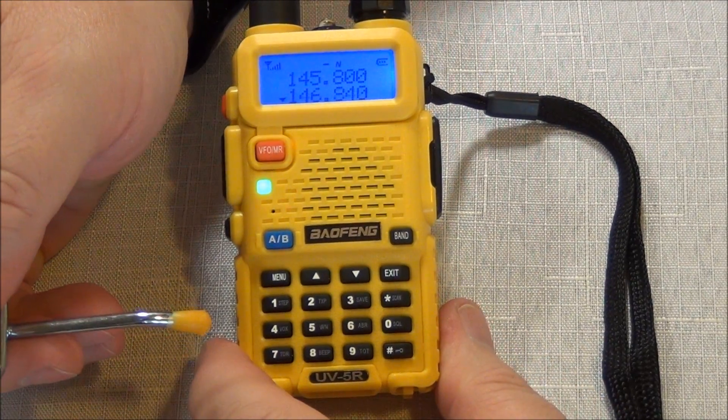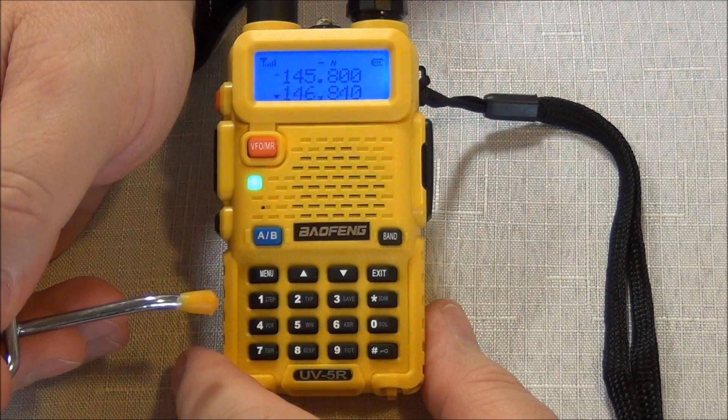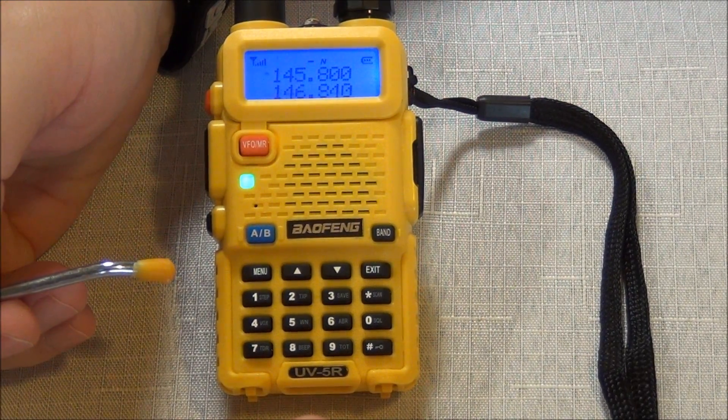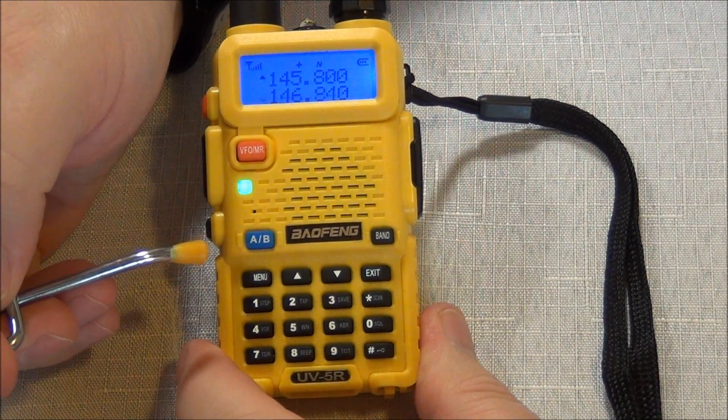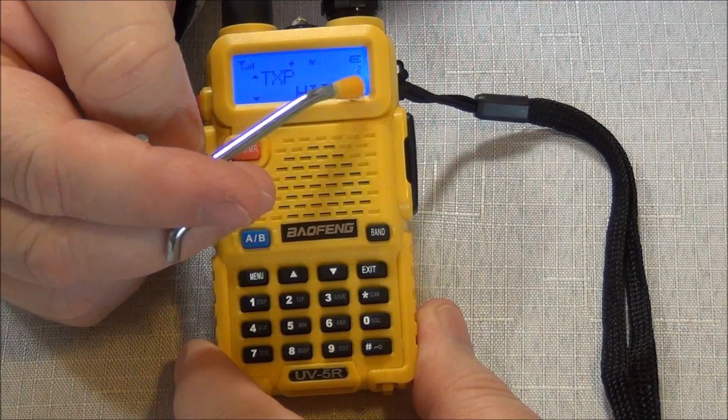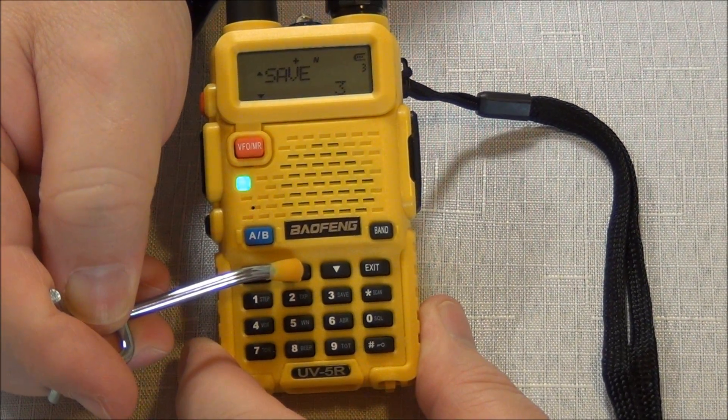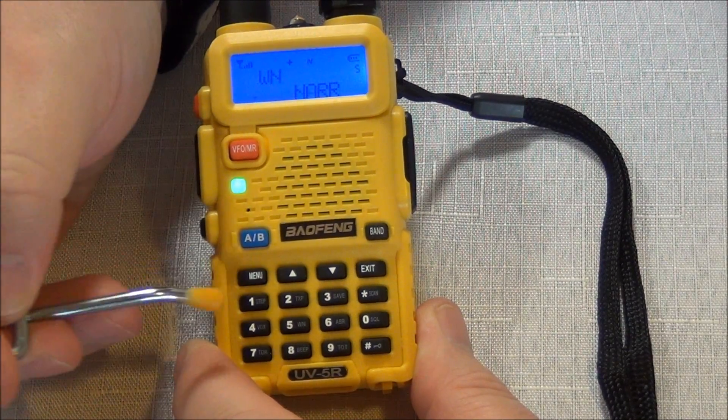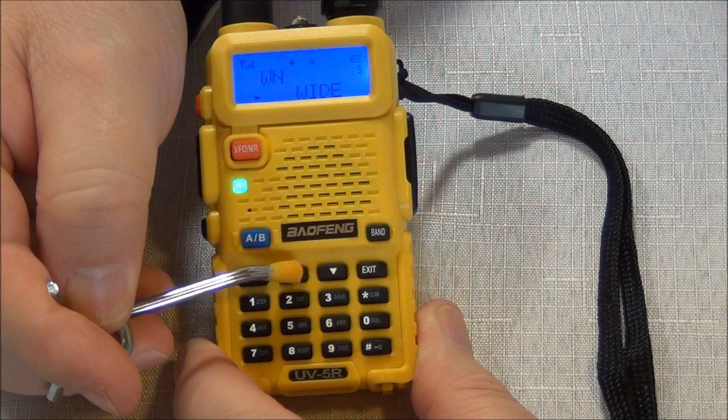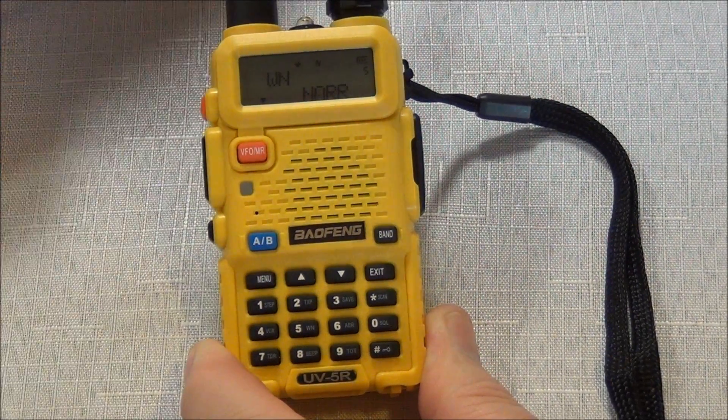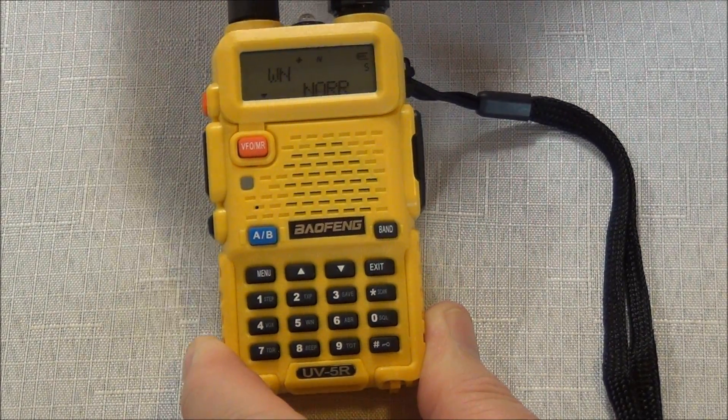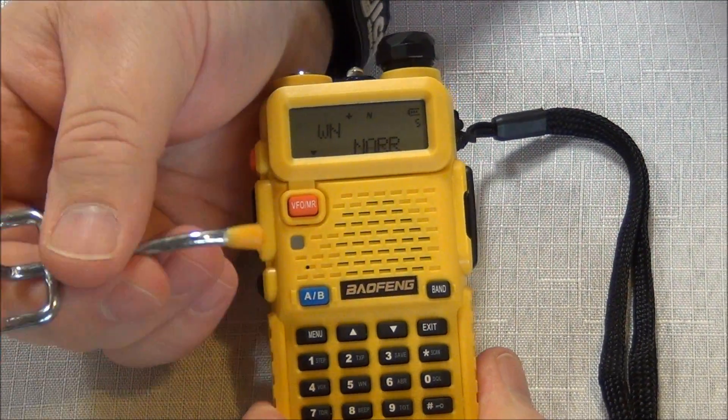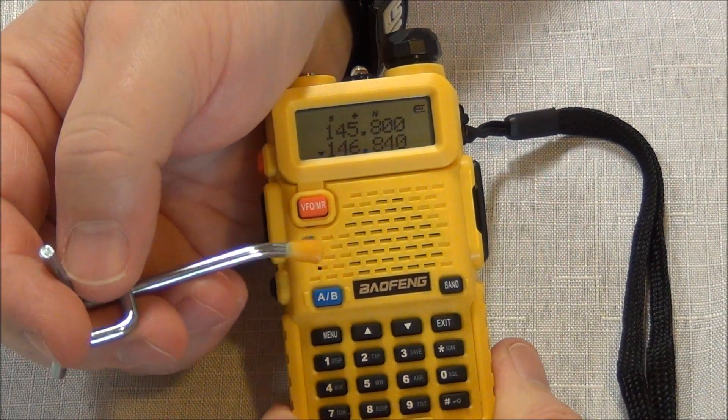The next one we're going to program is the wide or narrow. To the best of my knowledge, currently every repeater is using narrow. If there are some that require wide, just take that into consideration. We hit menu again. We're on transmit power two. Let's go up to number five. And we select menu. You can see we are at narrow. This picking up background noise is a little irritating, so I'm just going to pull the antenna off temporarily. We've got our narrow menu, exit, menu, and exit to exit.